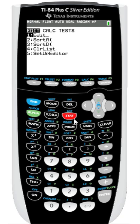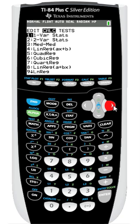Notice along the top of the stat menus I have a few tabs: edit, calc, and tests. I'm going to press the right arrow key once to move over to the calc area, and now I'll find some regression commands.